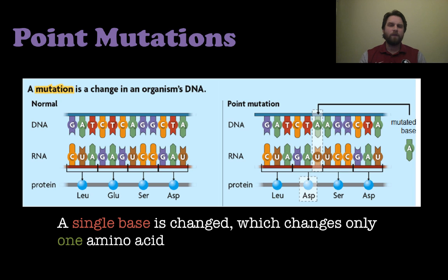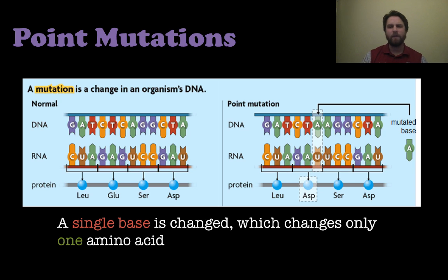There are two different types of mutations we're going to discuss. One of them is called a point mutation — that's when you take a single base and change it, making a different amino acid than you should have. On the left-hand side you have your normal strand of DNA, messenger RNA, and the polypeptide chain. If we change one of those C's to an A, that changes the messenger RNA below as well, which in turn changes the amino acid in that chain. So a point mutation is really one base, one amino acid affected.